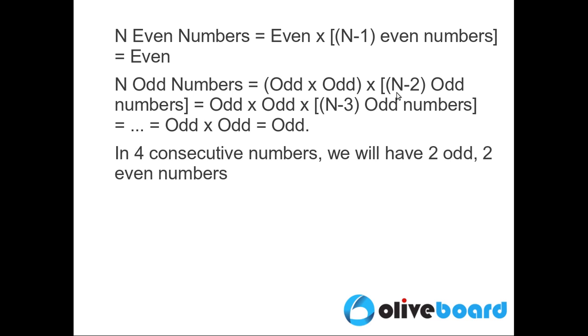In four consecutive numbers, we'll have two odd and two even numbers, which means the product will be even into odd into even into odd, which is an even number multiplied by an even number, which is equal to an even number.